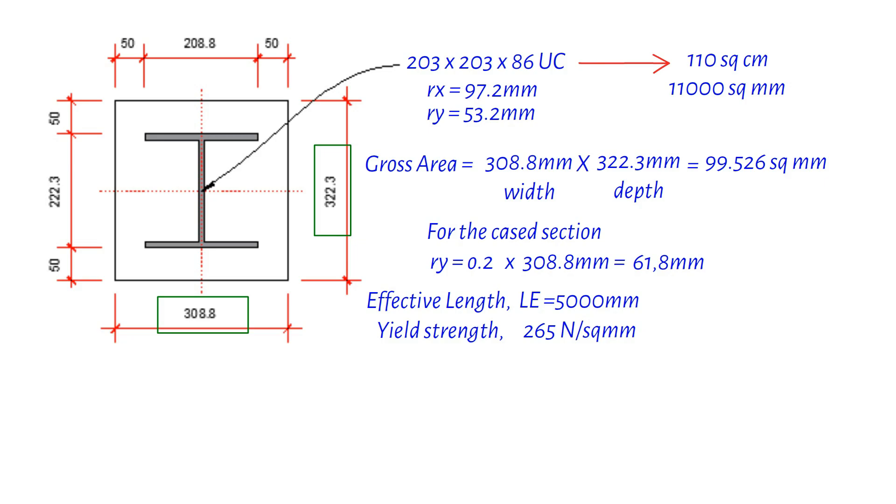It's time to calculate the slenderness ratios. For lambda-x, we get 54 when we divide the effective length by RX. For lambda-y, we get 81 by dividing the effective length by RY. These slenderness ratios reveal interesting details about our column, but can you guess what they are?